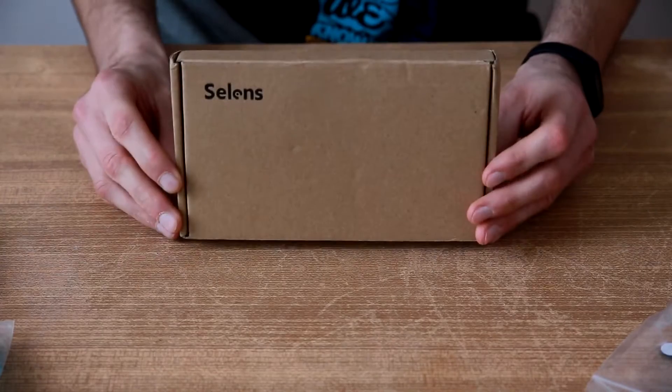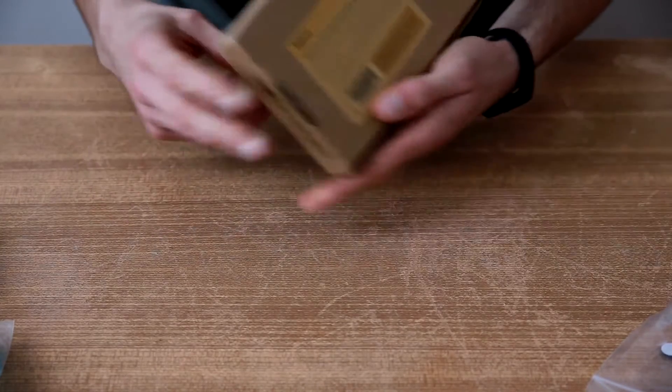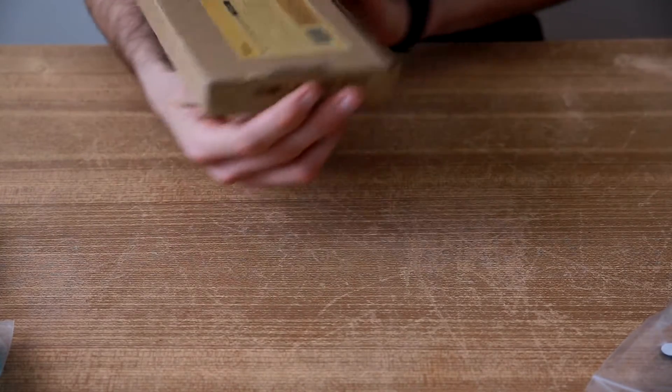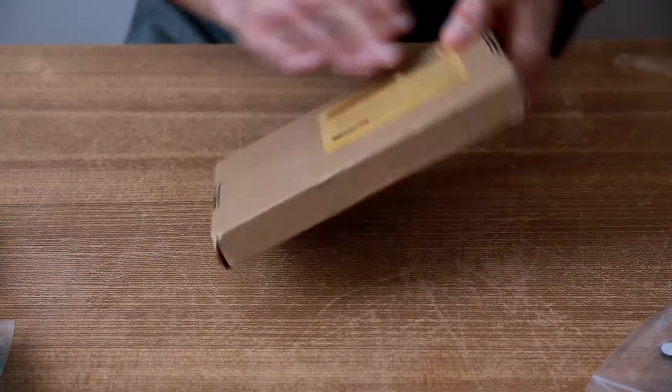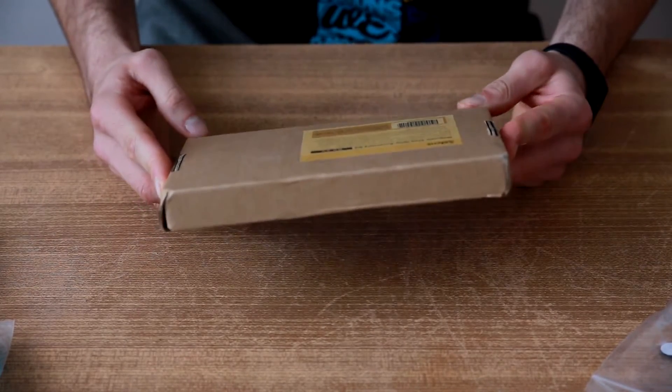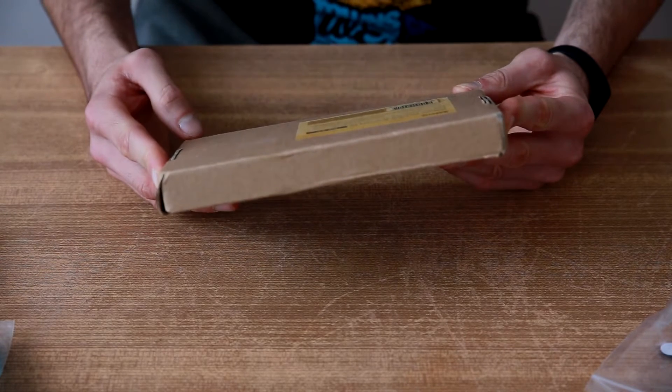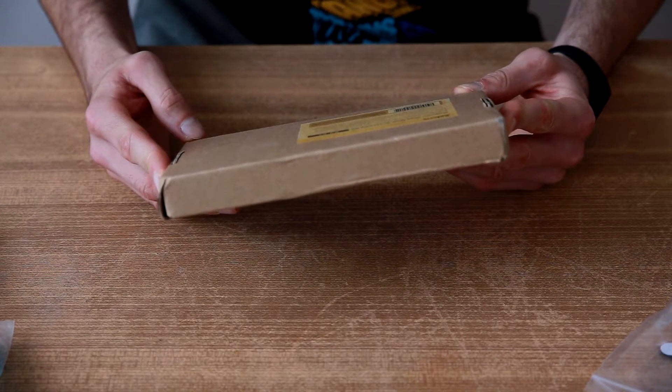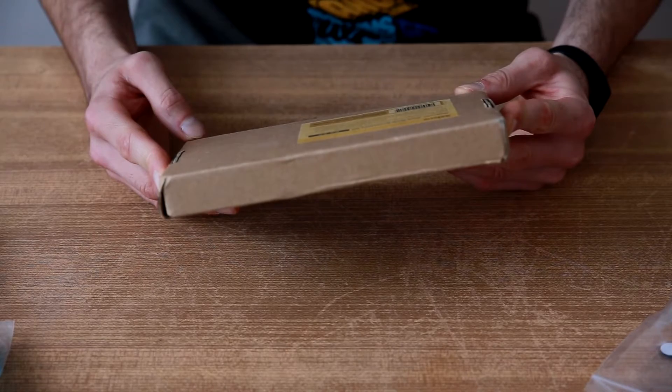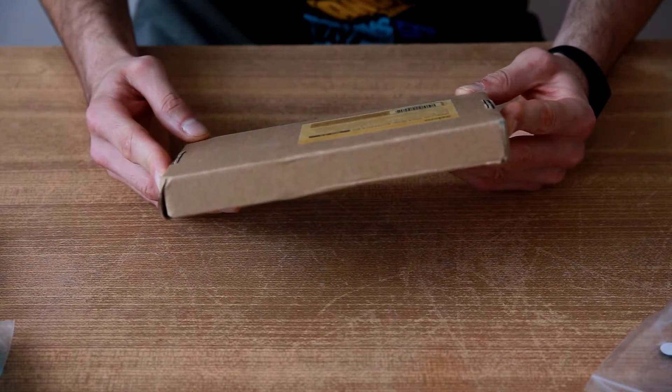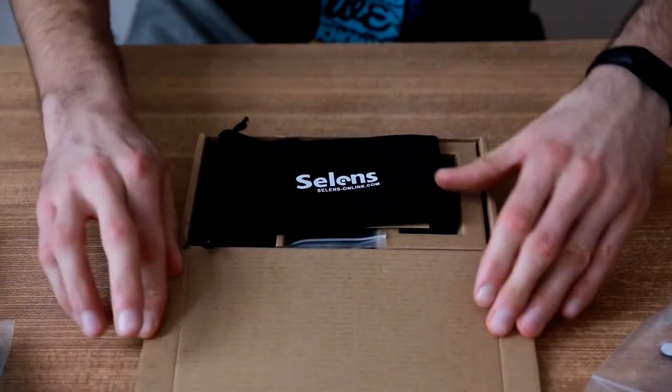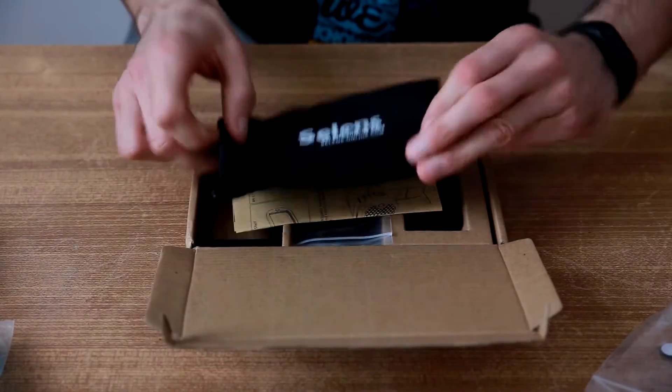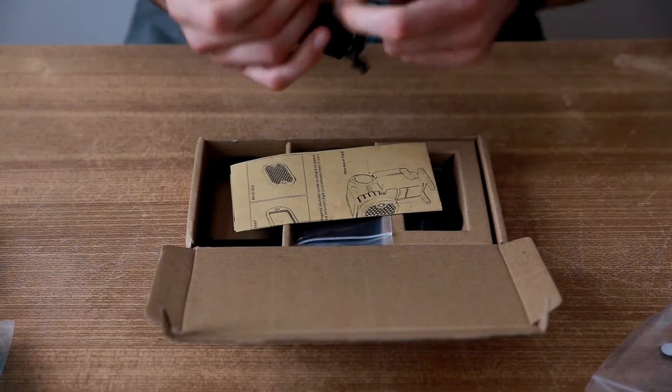On the back we have the model, also MNBK. Inside we have gel frame, gel slot, gels, honeycomb grid. Let's see what's inside the box. We have a little small carry case.